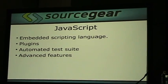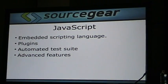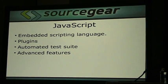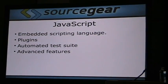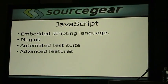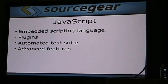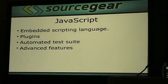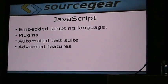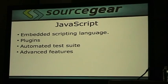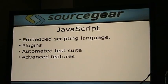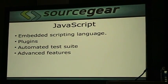Veracity has an embedded scripting language, which isn't really so much of a difference for, say, Mercurial, which is written in Python. But our scripting language is JavaScript. We embed the SpiderMonkey interpreter. That's used for all the usual things — plug-ins, our test suite is largely written in JavaScript. And there are a few things that are so scary that we expose them only through the JavaScript layer so that people won't do them accidentally.